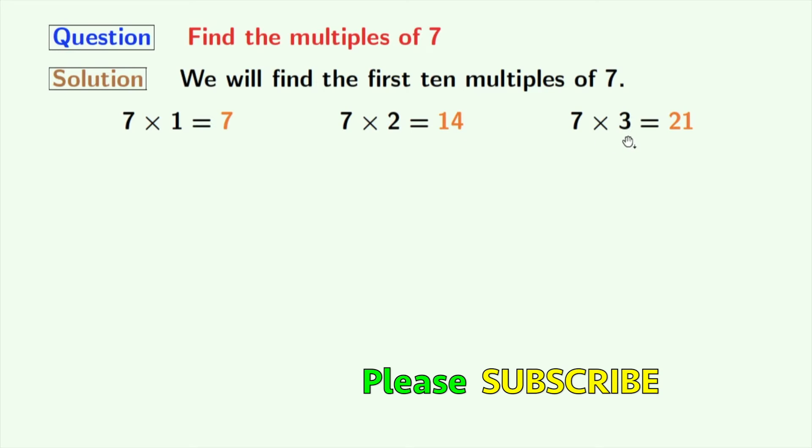Multiplication of 7 and 3 gives us 21. 7 times 4 gives us 28. If we multiply 7 with 5, we will get 35.